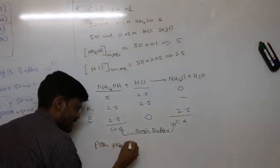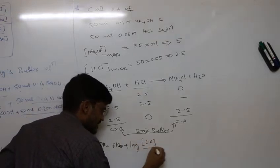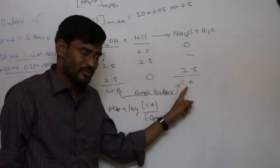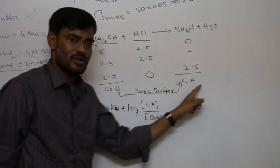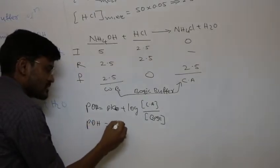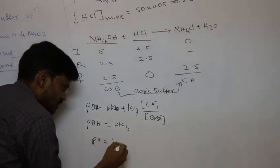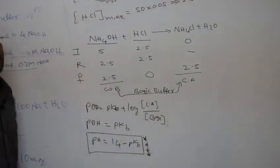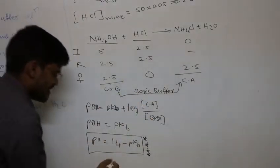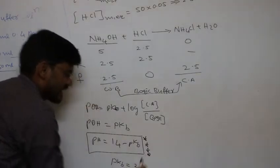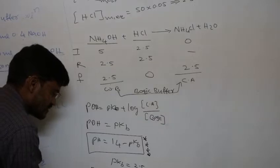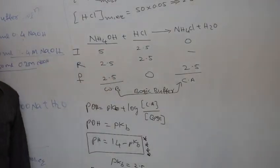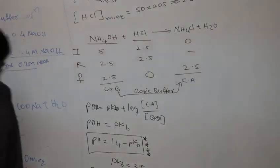For a basic buffer solution, pOH = pKb + log(concentration of conjugated acid / concentration of base). Concentration of base = 2.5, concentration of conjugated acid = 2.5, ratio is 1:1. So pOH = pKb and pH = 14 − pKb. If pKb = 2.5, then pH = 14 − 2.5 = 11.5 is the pH of this basic buffer solution.